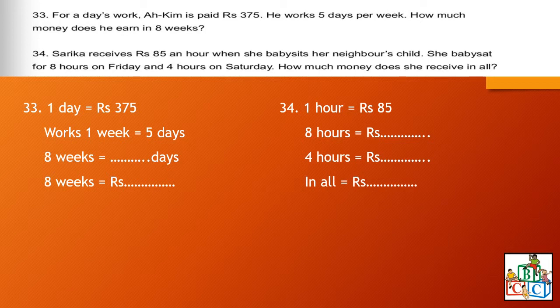The next question: Sarika receives 85 rupees an hour when she babysits her neighbor's child. She babysat for eight hours on Friday and four hours on Saturday. How much money does she receive in all? For one hour she gets 85 rupees. For Friday — eight hours — how much? For Saturday — four hours — how much? Then calculate the total amount she receives in all.